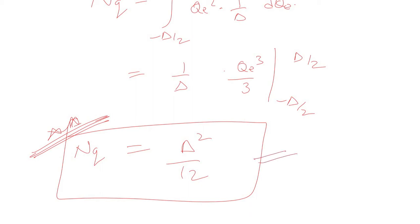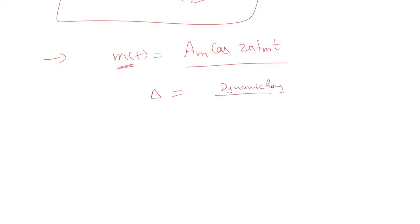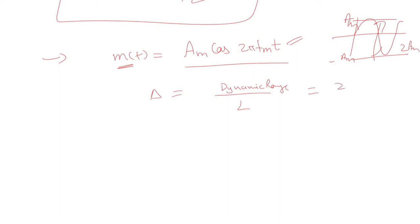If we assume the message signal is sinusoidal — m(t) = Am cos(2π fm t) — then the step size delta is the dynamic range divided by the number of quantization levels. For a sinusoidal signal, the dynamic range is 2Am (from minus Am to Am), so delta equals 2Am divided by L, where L equals 2 raised to power n in terms of the number of bits n.